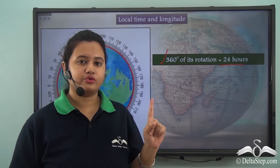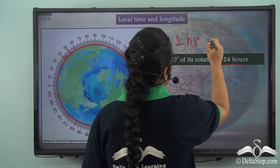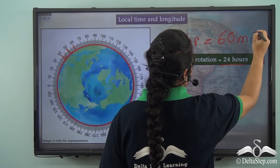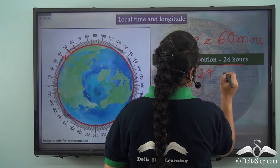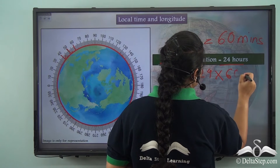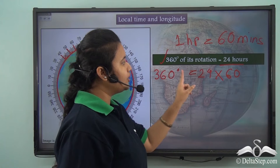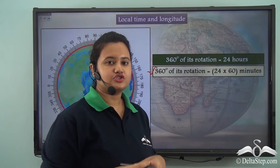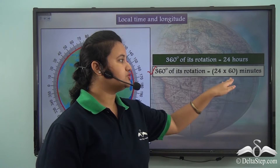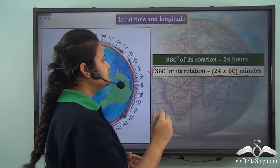Now let's express the time of one full rotation in minutes. We know that 1 hour equals 60 minutes, so 24 hours equals 24 multiplied by 60 minutes. Therefore, we can say that 360 degrees of earth's rotation is equal to 24 × 60 minutes. So our earth takes 24 × 60 minutes to rotate 360 degrees.